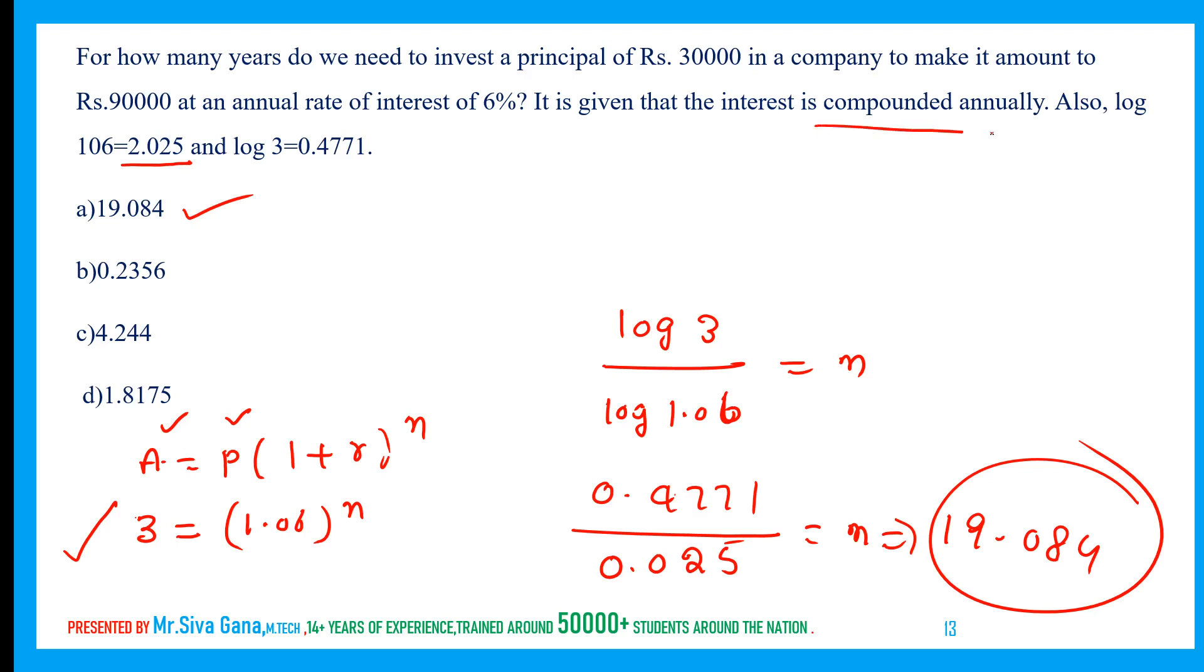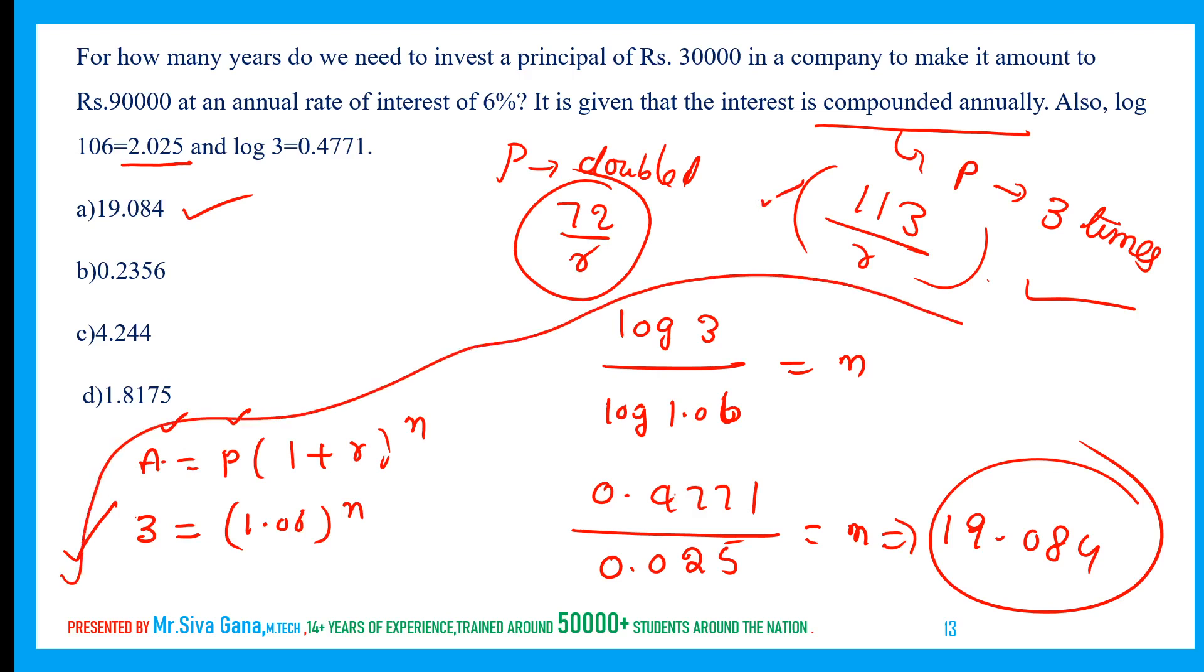Remember, in case of compound interest, the principal becomes 3 times in 113 divided by rate of interest. This is the simple way. If it is doubled, the principal becomes doubled in 72 divided by R, or 70 divided by R. Better use this. If you remember, it is easy, it is faster. Otherwise it takes a time of 2 minutes. If you remember this, it is a matter of less than a minute.